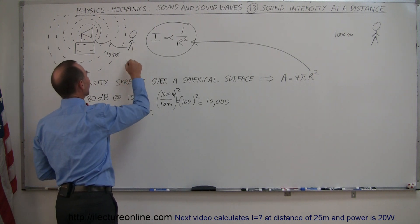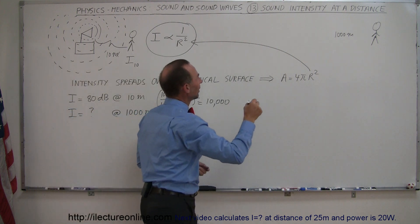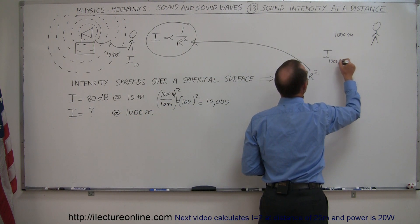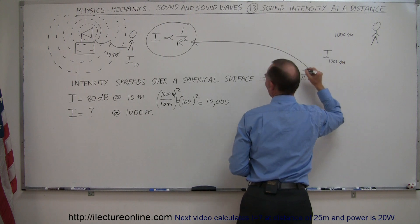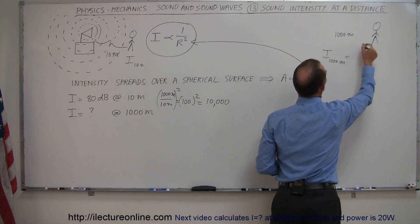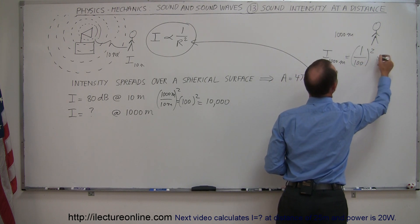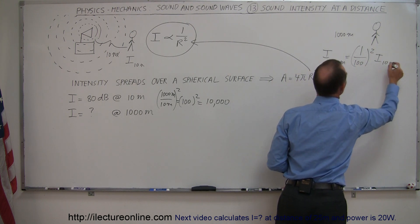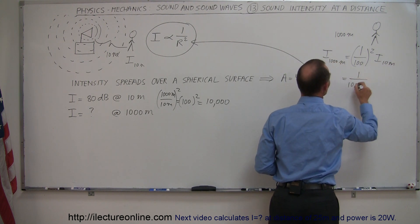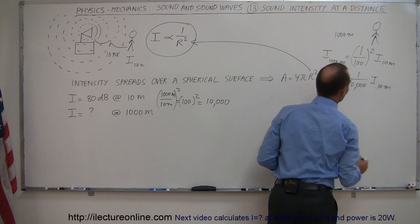So whatever the intensity is at 10 meters, the intensity at 1,000 meters is equal to 1 over 100 squared times the intensity at 10 meters, which is 1/10,000 times as much as the intensity at 10 meters.